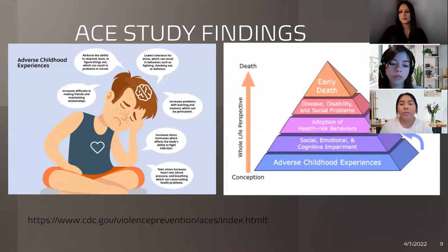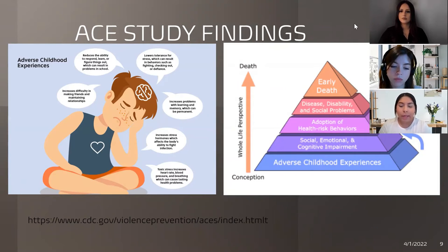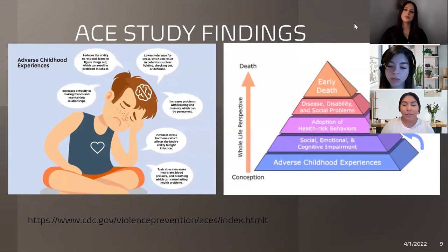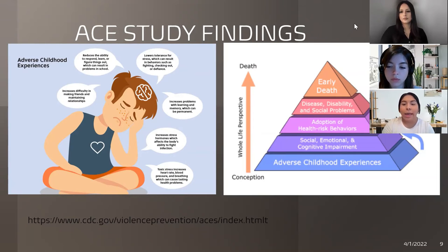Here are two diagrams from the ACE study findings. The ACE study found that adverse childhood experiences are very common and are dramatically related to adults' well-being, health risks, disease, and lifespan. A person with a high ACE score is likely to die 20 years younger than average, and is 2 times more likely to be a smoker, 5 times more likely to experience depression, 7 times more likely to be an alcoholic, 10 times more likely to have injected drugs, and 12 times more likely to attempt suicide.